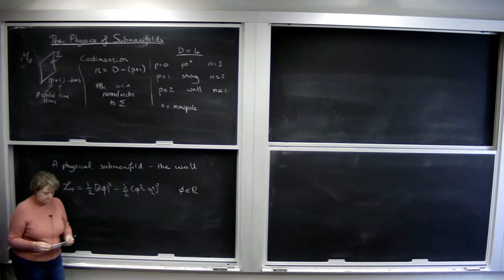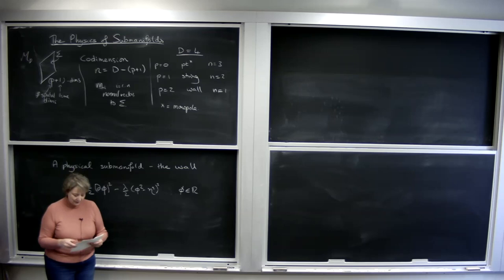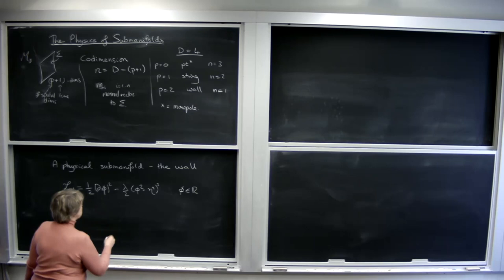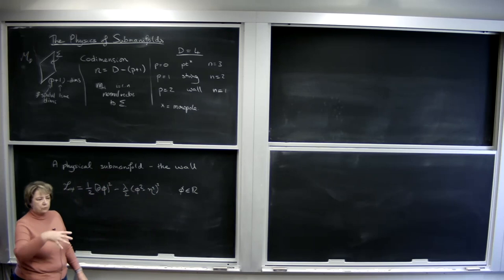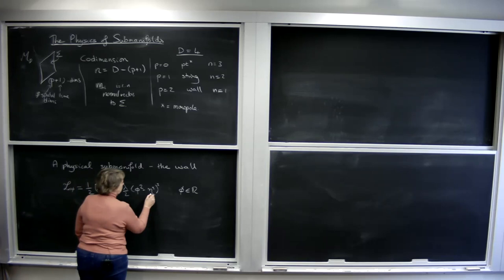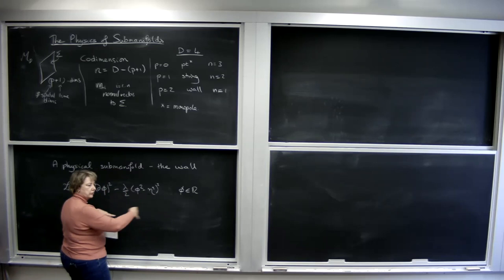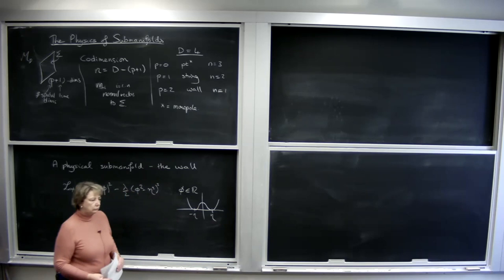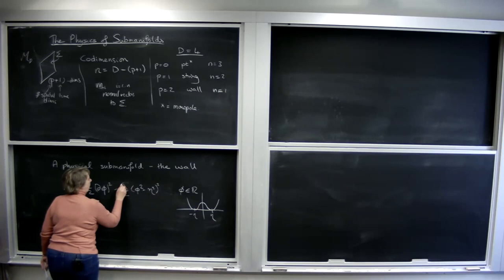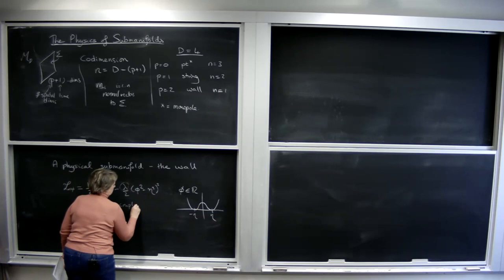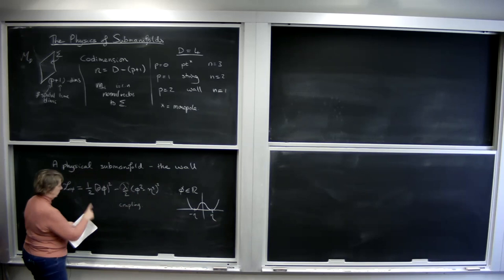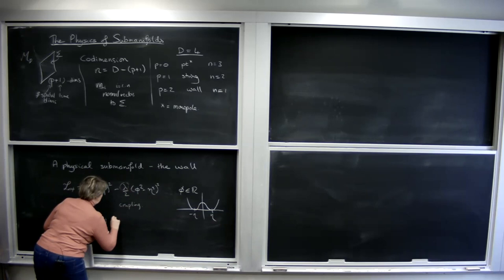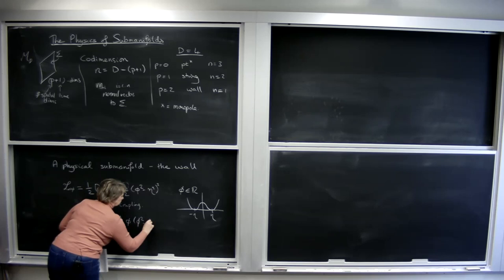I'm going to take a real scalar field. This is my standard Lagrangian when I'm doing field theory - I have a kinetic term, just the derivative squared, and I have some potential. Eta is an inverse mass scale. Lambda tells you coupling. If you look at the equation of motion for this Lagrangian, you get the Dalembertian acting on phi plus this term.